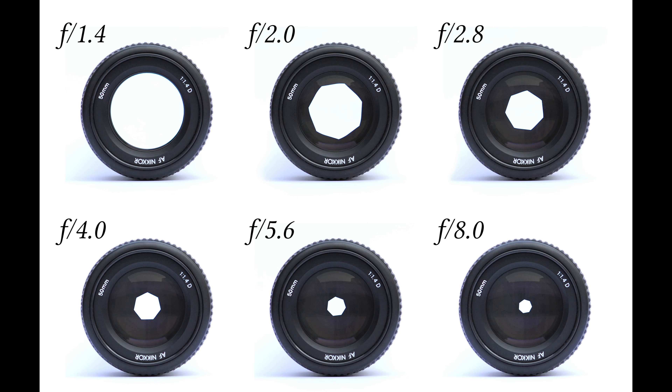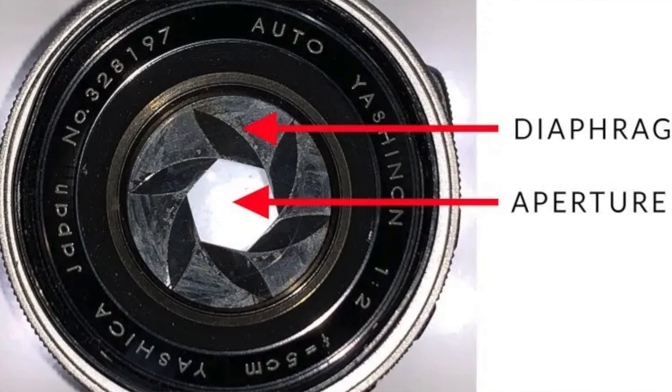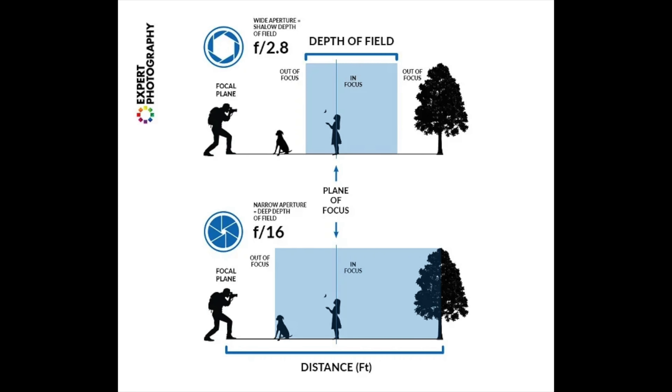We denote aperture with the F value. If you look at the lens or camera specifications, the aperture is expressed as an F number. Basically, if the F value is lower, the aperture is wider and more open. If the F value is higher — for example F10 — then the aperture is smaller and less open, so the background blur is also less.